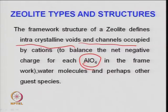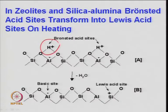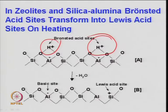AlO₄ in the framework with associated water molecules gives Brønsted acidity because O-H connected to aluminum has the ability to accept a proton due to negativity. In zeolites, Brønsted acid sites can be transformed into Lewis acid sites, or Lewis can be converted back to Brønsted. When you heat the Brønsted acid catalyst to around 450-500°C, the proton is removed.